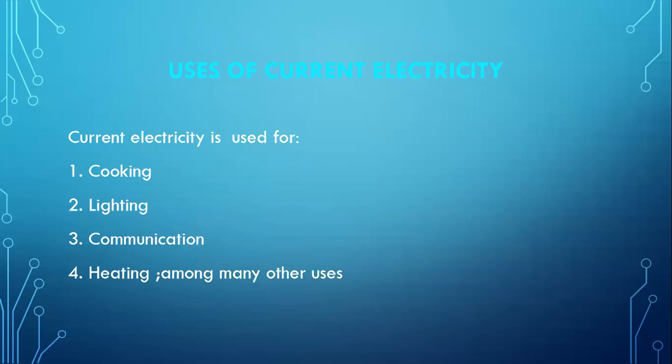Let's see some of the uses of current electricity. First, it is commonly used for cooking, especially at our homes. Second, it is used for lighting, as the source of light in bulbs used in our homes. Third, it is used in communication, where electricity is applied to communication appliances like mobile phones.